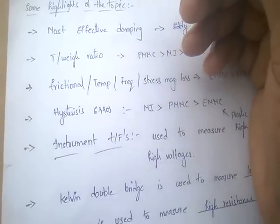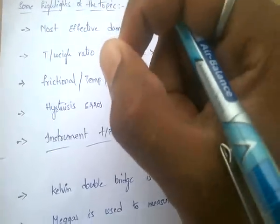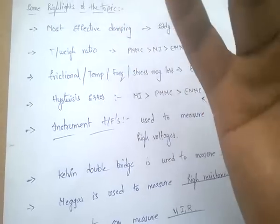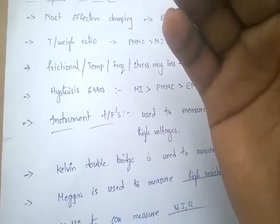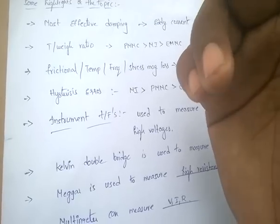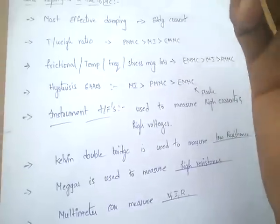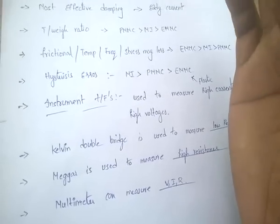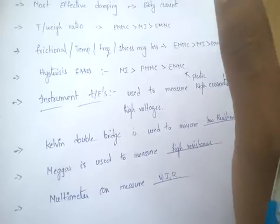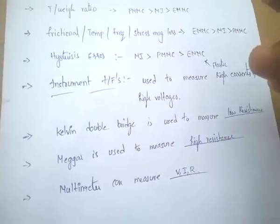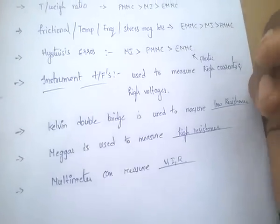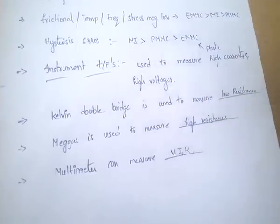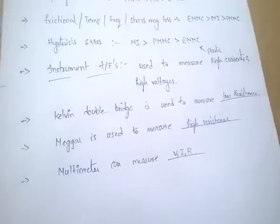Let's recover all these meters once again. PMMC is used only for DC. In case of MI meters — both AC and DC. Electrodynamometer, rectifier meter, and thermal meters are used for both AC and DC. Induction type meter is only for AC, not for DC. Only DC is PMMC, only AC is induction type, remaining all are AC and DC. The principle of PMMC is motoring principle; MI type uses self-inductance; electrodynamometer type uses mutual inductance.